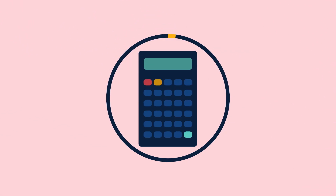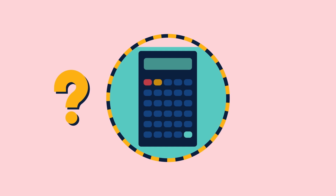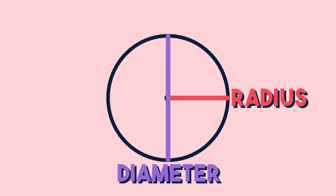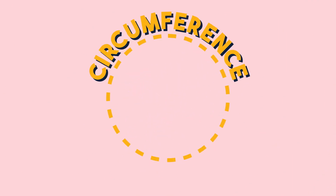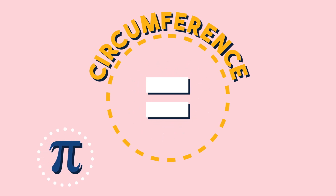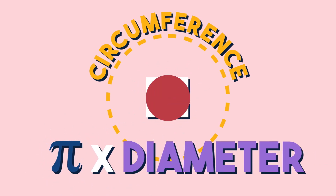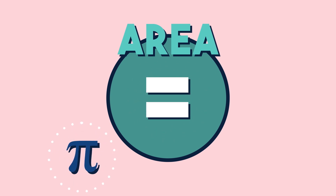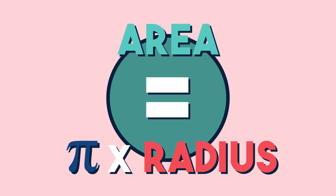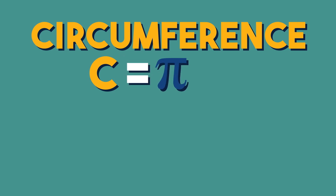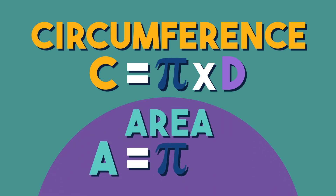We can calculate them both if we know other measurements, using radius, diameter, and pi. Circumference of a circle is pi times diameter, and the area is pi times radius squared.